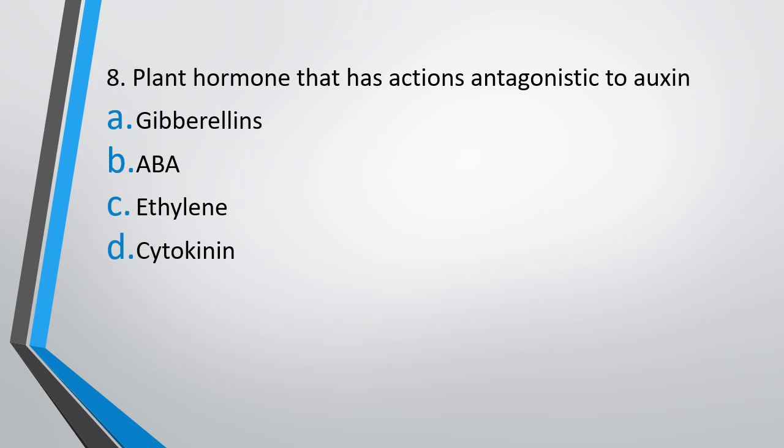Question 8: The plant hormone whose action is antagonistic to auxin is — Option A: gibberellins, Option B: ABA (abscisic acid), Option C: ethylene, or Option D: cytokinin. The correct answer is Option D, that is cytokinin.